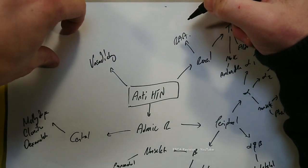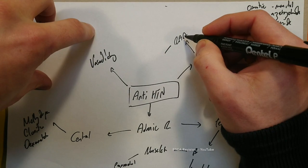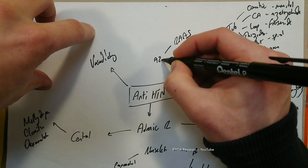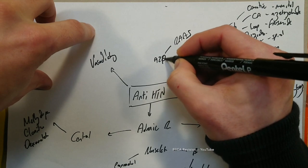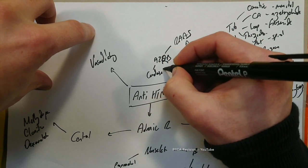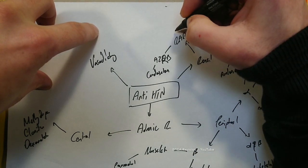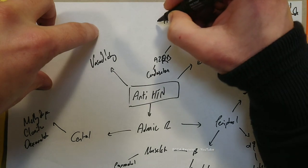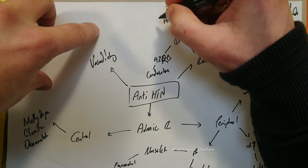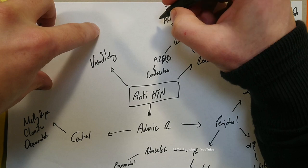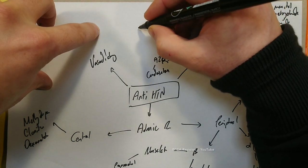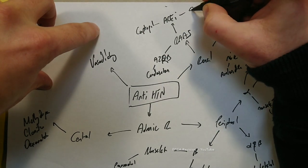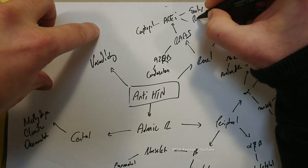If we think about the renin-angiotensin-aldosterone system, then we can think about the A2RBs, which is candesartan. And then we've got ACE inhibitors as well. And they can be split up into several groups, but we will keep it as medications such as captopril, enalapril, ramipril.